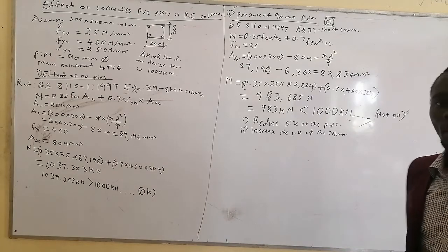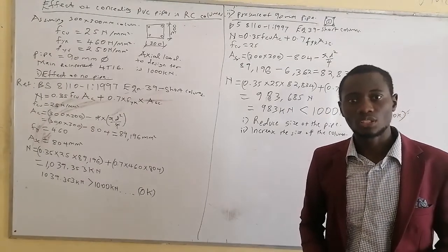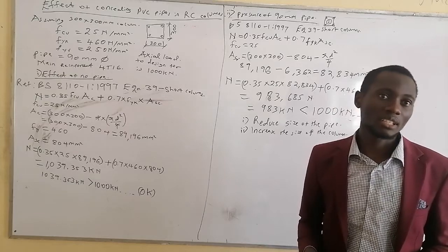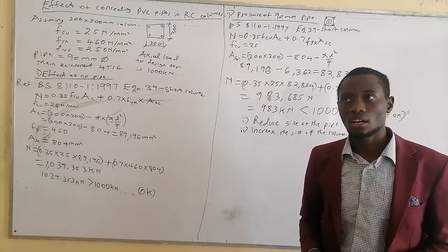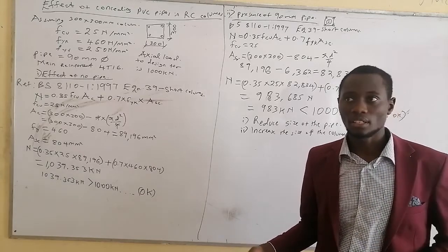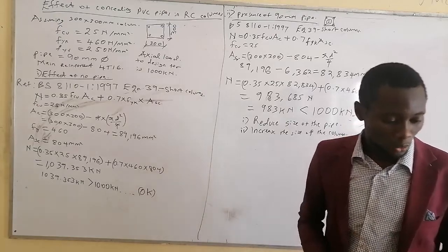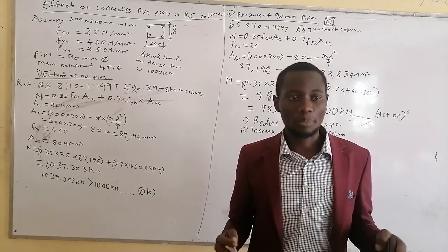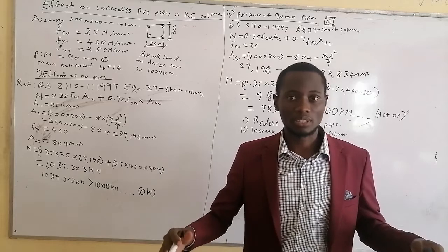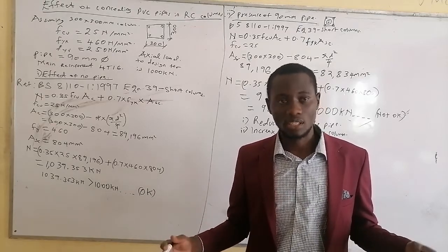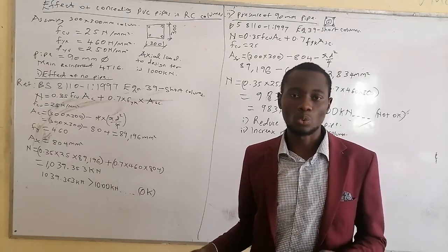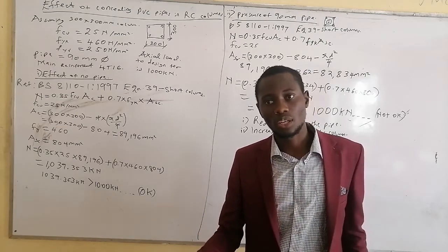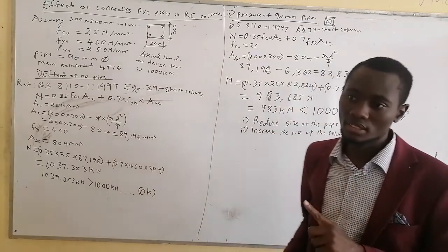There are also many other considerations. Whenever you are doing this on site, there are two things you always need to consider. First, ensure that your concrete is properly vibrated during placement so that it is compact, to avoid honeycombs and voids — those are the small spaces that you might have in concrete, and if you have such voids then it is going to affect the structural ability of the column.